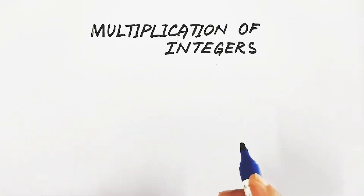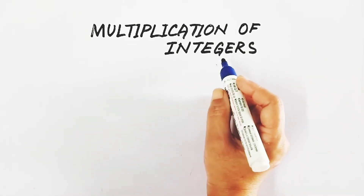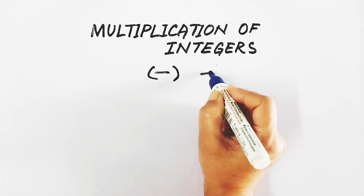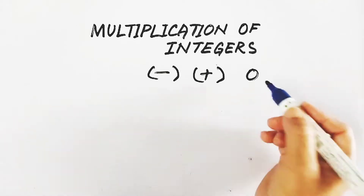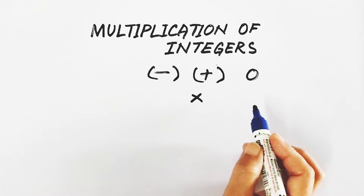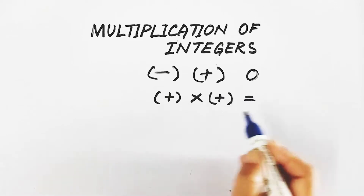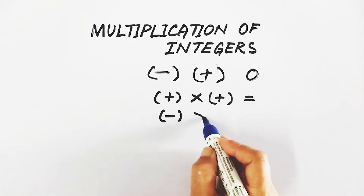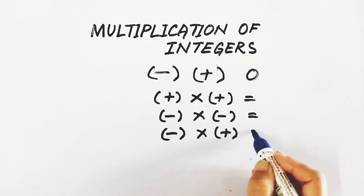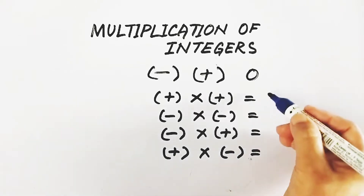Hello students. We have already learnt addition and subtraction of integers, but in this class we are going to learn multiplication of integers. You know that integers may be negative, positive, or zero, which is neither negative nor positive. So when we are finding the product of any two integers, they may both be positive, both negative, or one negative and another positive.